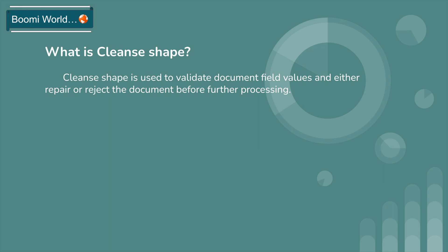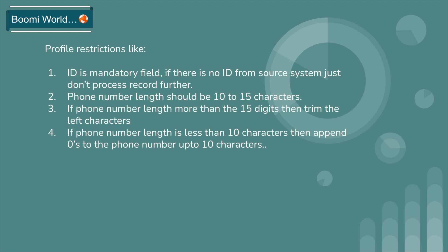Suppose you are getting some employee details from a source system and your target system asks you to apply some restrictions while processing all records. Those restrictions are: ID is a mandatory field, so if there is no ID from the source system, don't process that record. The phone length should be 10 to 15 characters — if phone length is more than 15 characters, trim the leading characters; if phone length is less than 10 characters, append zeros up to 10 characters. These are the restrictions which the target system asks you to perform, and we'll configure Cleanse Shape with these restrictions on Boomi.